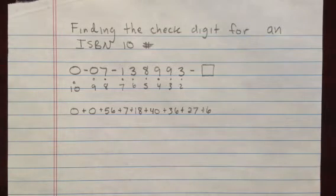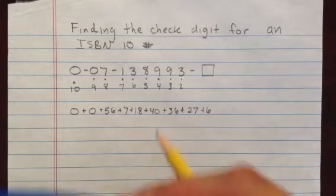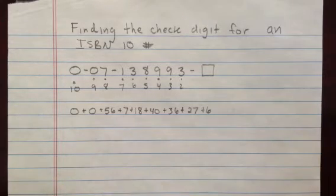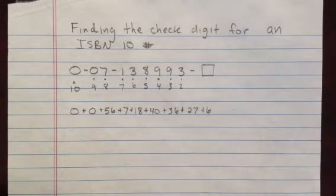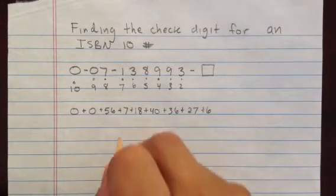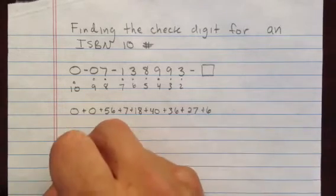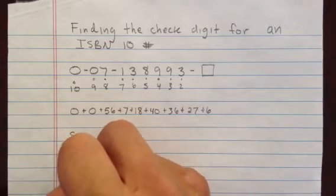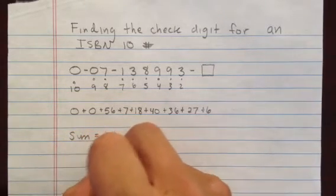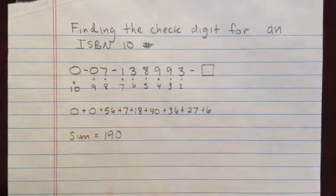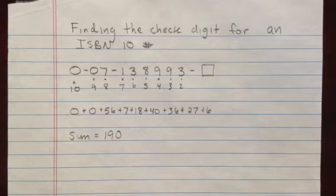Well, that was an unexpected call there — it should not really be much of a problem. Okay, so from here I got a sum of 190. So my sum equals 190.